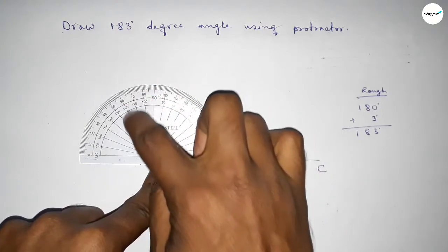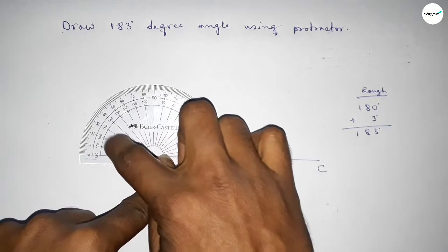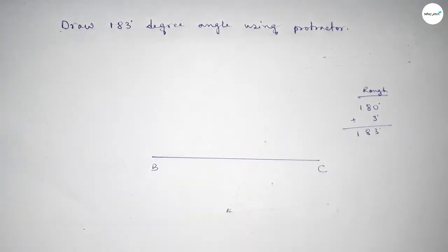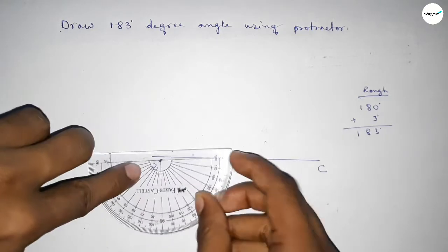Again putting the protractor on the point B perfectly, then counting extra 3 degree angle.